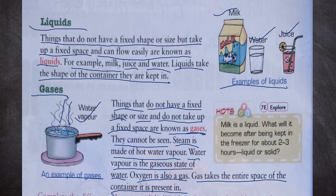Milk is a liquid. What will it become after being kept in the freezer for about two to three hours — liquid or solid? Because milk will freeze, it will become solid.